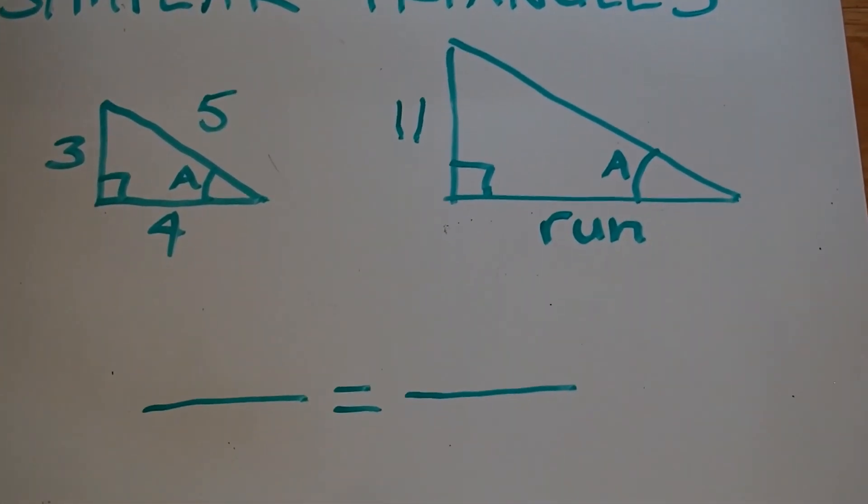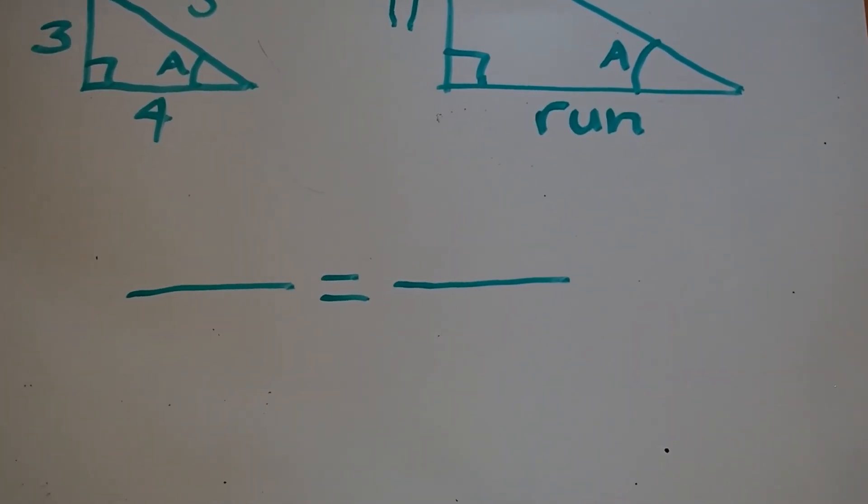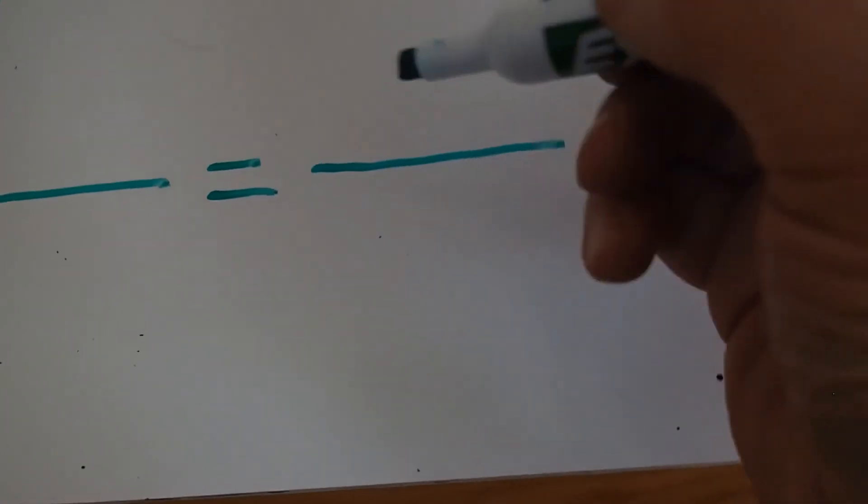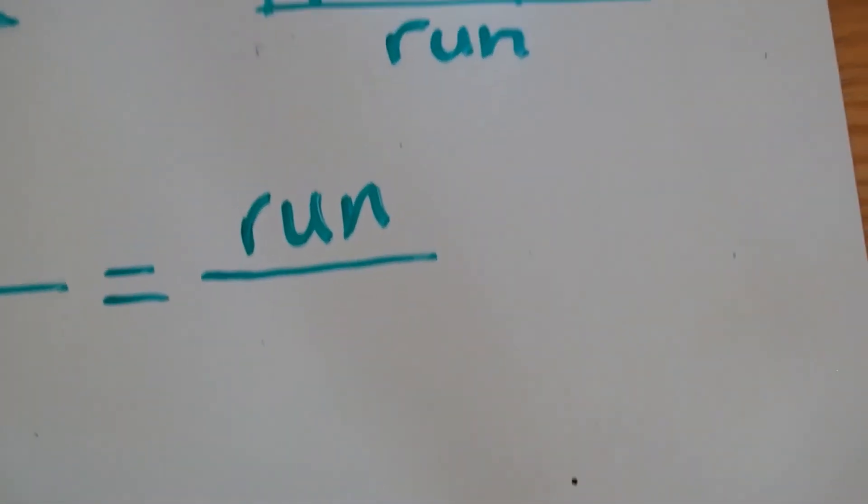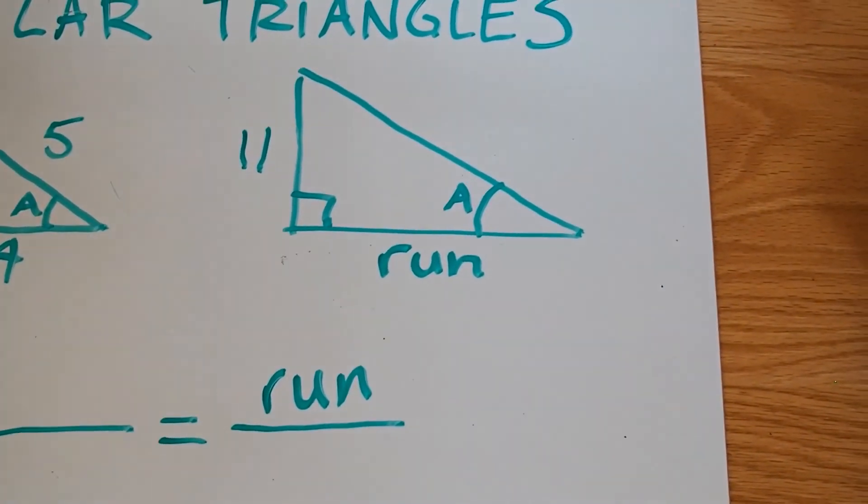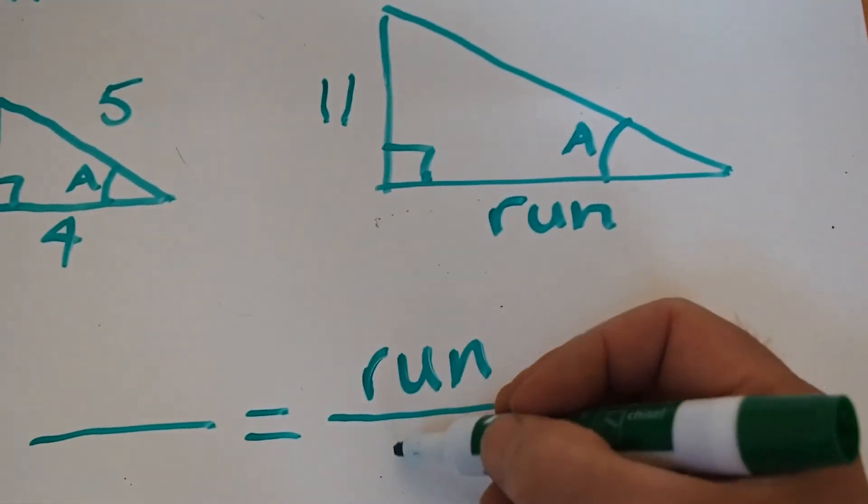What I like to do is I like to start by putting the unknown on the top of one of the fractions. It doesn't matter which one. I'm going to stick it over here. Then what I'm going to do is I'm going to take the other number on that triangle, in this case eleven, I'm going to put it on the bottom.